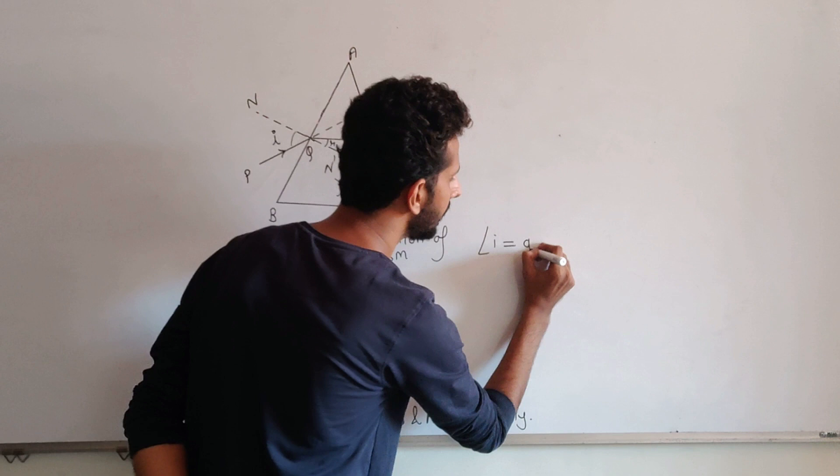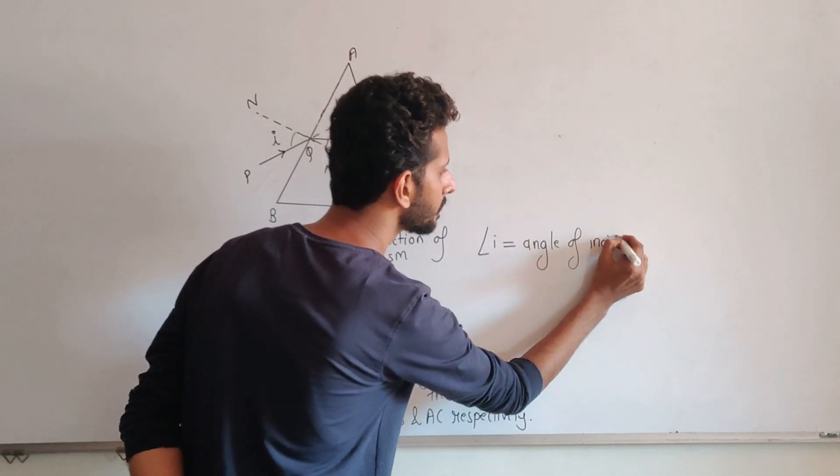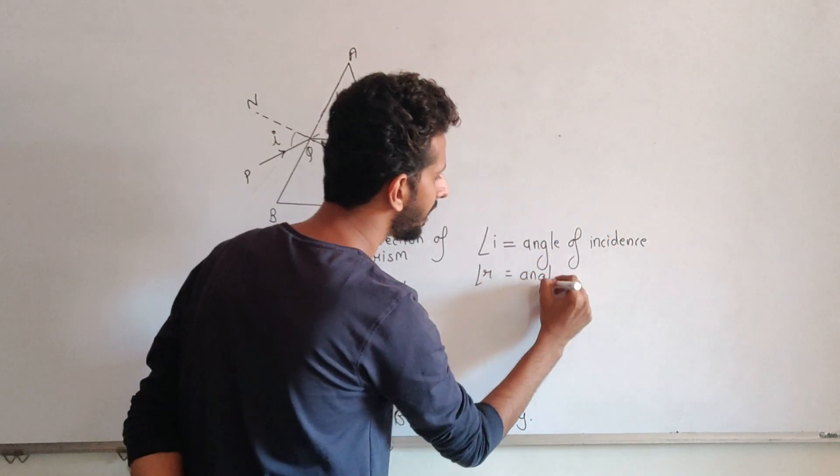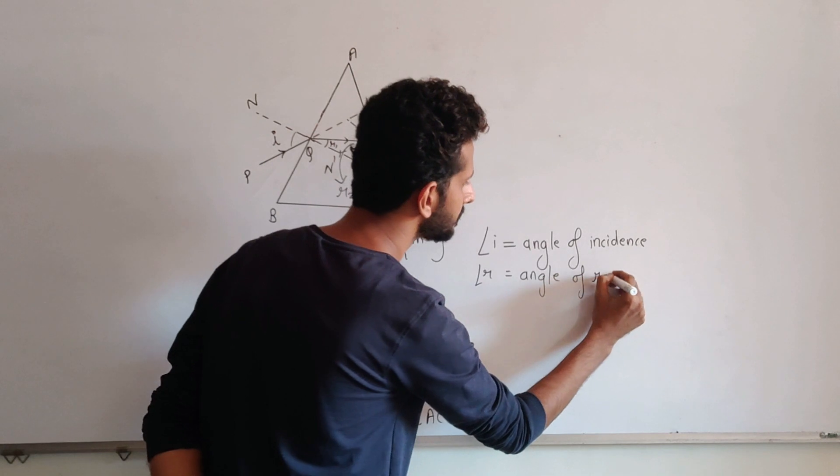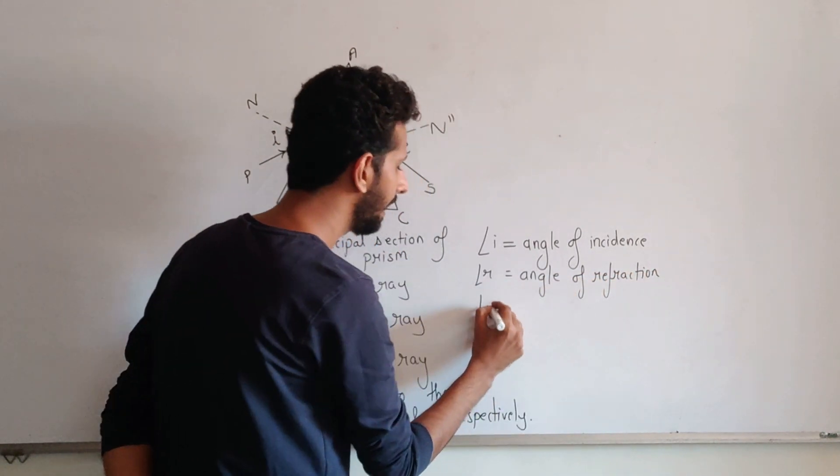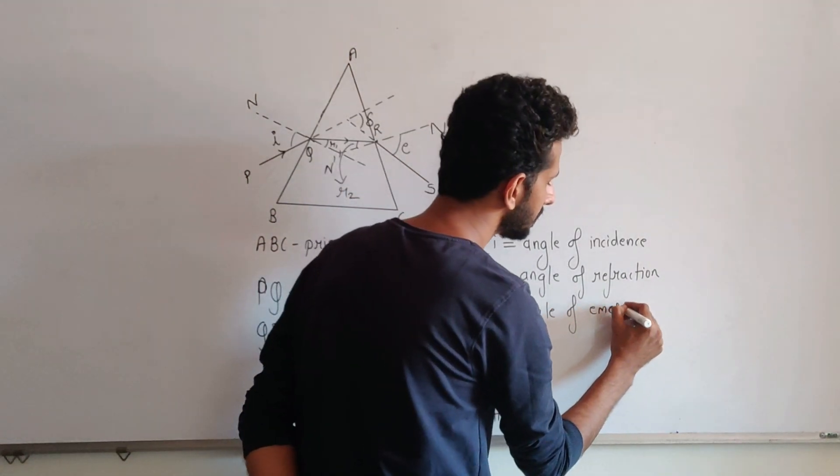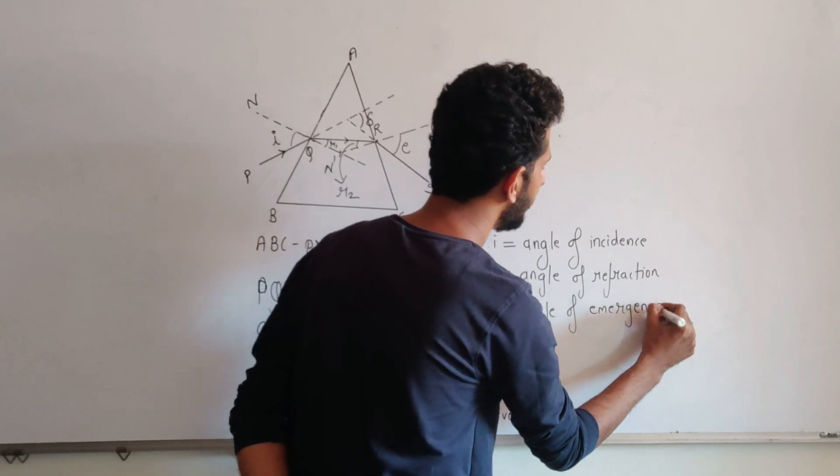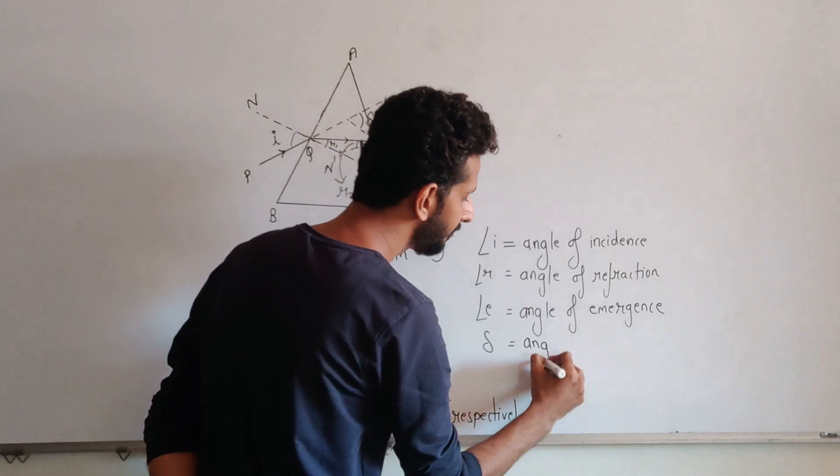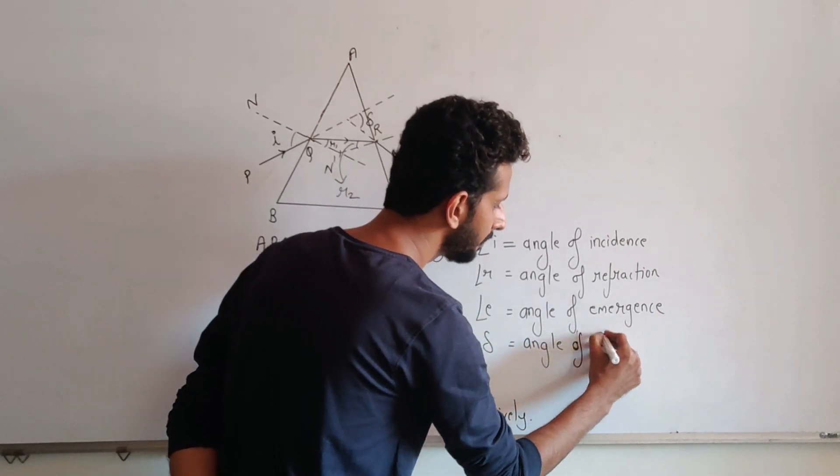Similarly mention angle I as angle of incidence, angle R as angle of refraction, and angle E as the angle of emergence. Apart from that, one more angle that we have to mention over here is delta, that will be your angle of deviation.